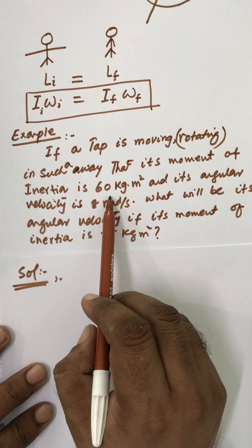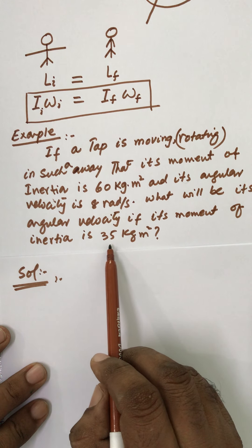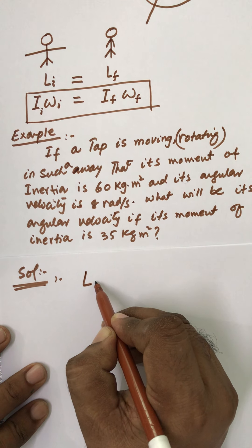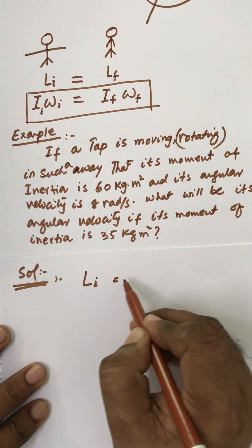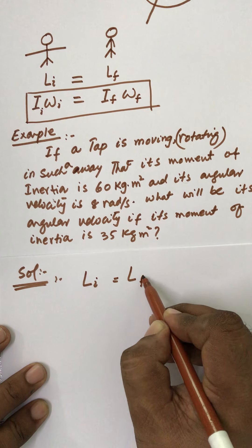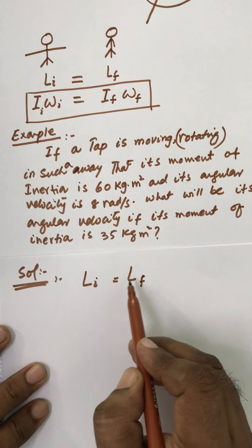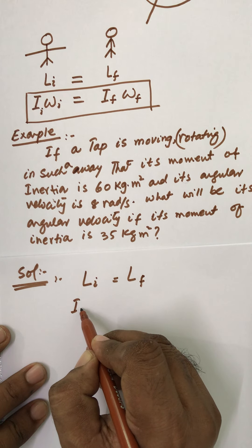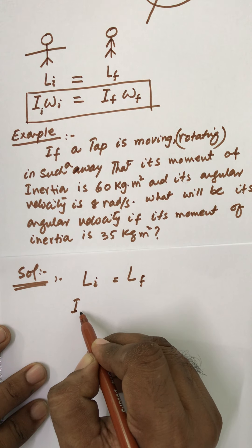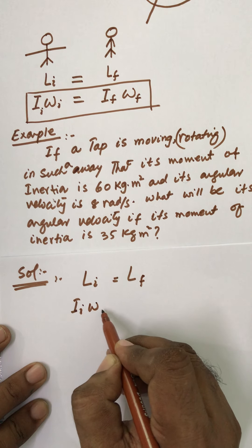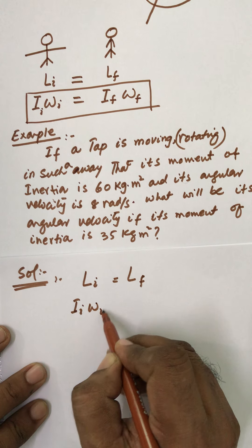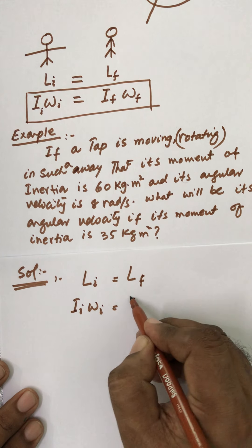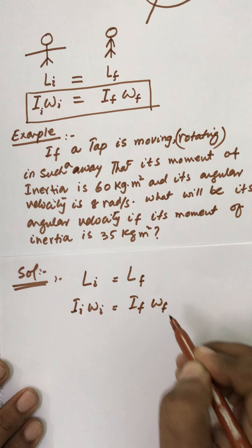Two situations are provided: when the moment of inertia was 60 and when the moment of inertia will be 35. According to the law of conservation of angular momentum, L-initial equals L-final. Angular momentum equals moment of inertia multiplied by angular velocity, so: initial moment of inertia times initial omega equals final moment of inertia times final omega.